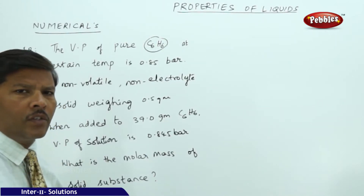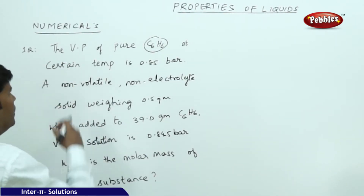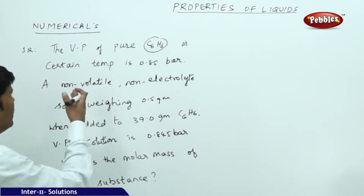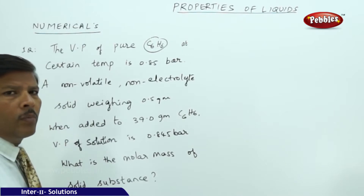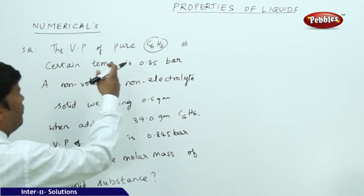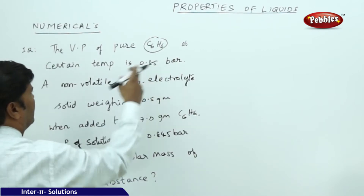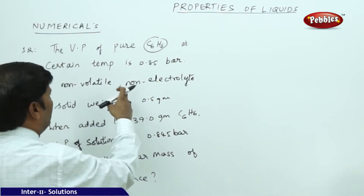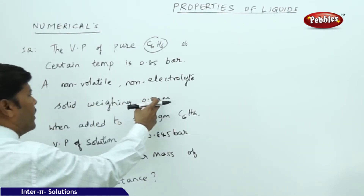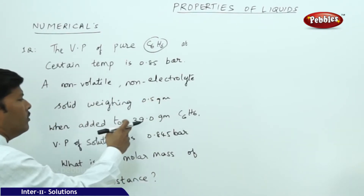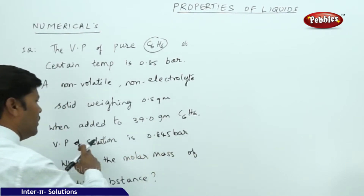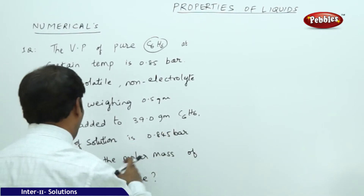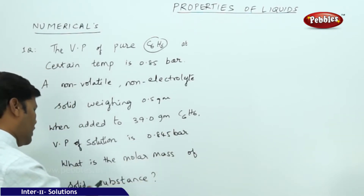Here the next part of the discussion is the numericals in properties of liquids. The first sample problem: the vapor pressure of pure benzene at a certain temperature is 0.85 bar, and a non-volatile non-electrolyte solid weighing 0.5 grams when added to 39 grams of benzene gives a vapor pressure of solution of 0.845 bar. What is the molar mass of the solid substance?